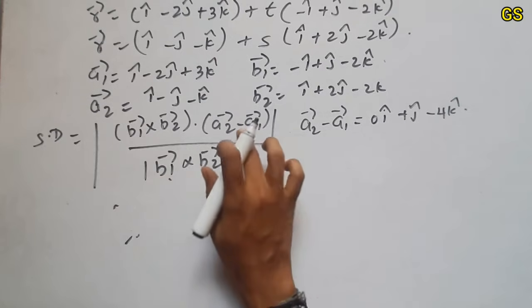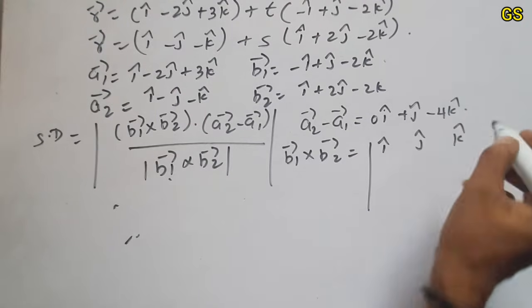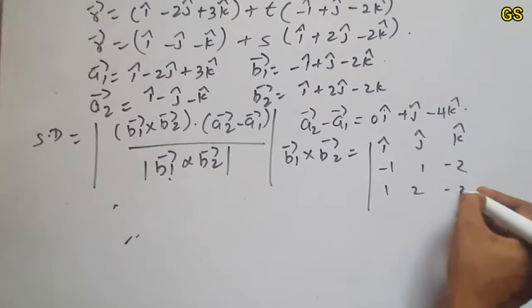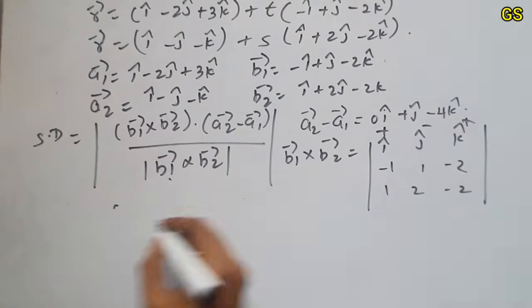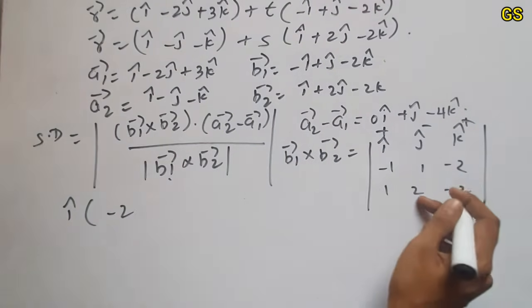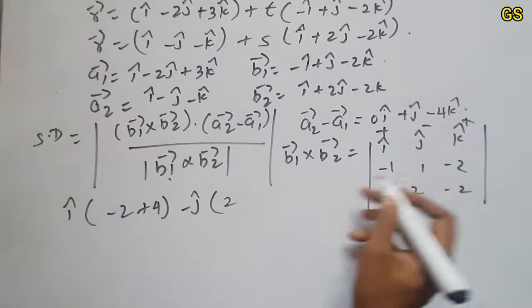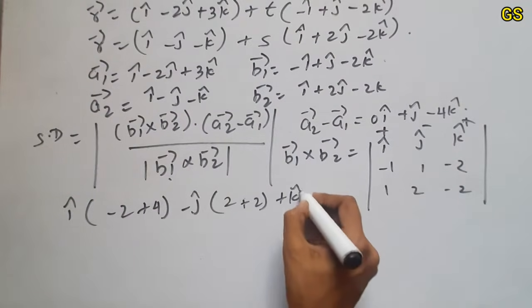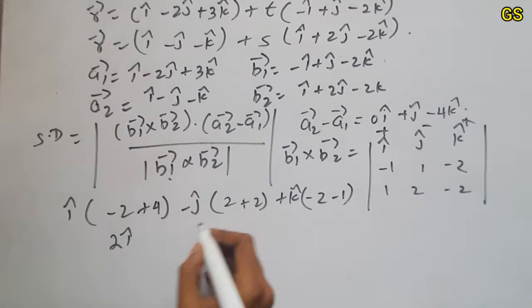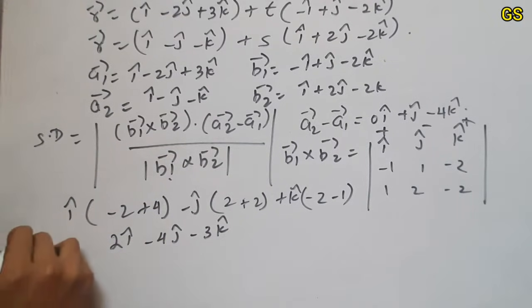Next, let's look at b1 cross b2. So I will add b1 cross b2. So i, j, k. First b1: minus 1, 1, minus 2. Second b2: 1, 2, minus 2. So i, this is 2, this is minus 2 plus 2, plus k. This row is minus 2, this is plus 1, minus 1. So 4 minus 2 is 2i, this is minus 4j, this is minus 3k. So this is b1 cross b2 answer.